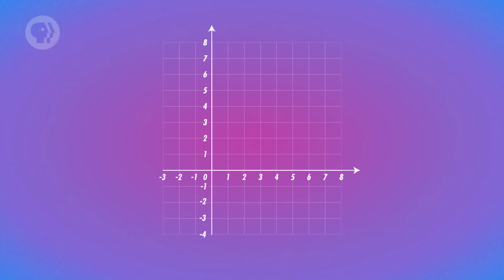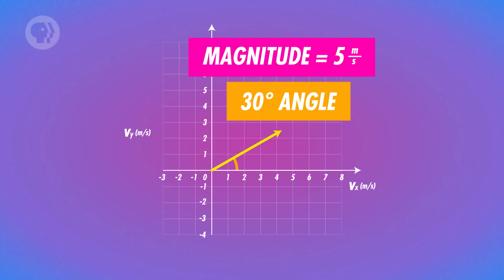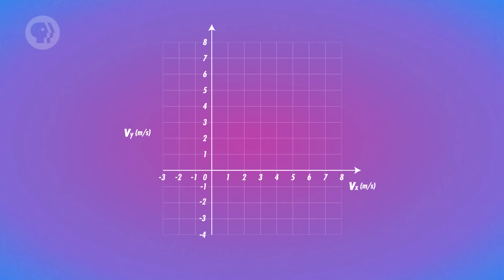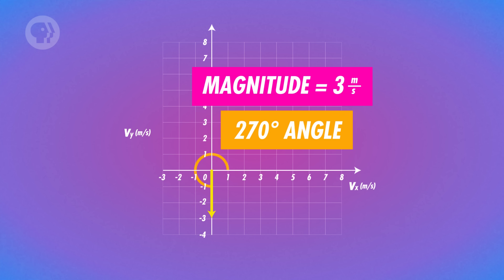Say your pitching machine launches a ball at a 30-degree angle from the horizontal, with a starting velocity of 5 meters per second. We can just draw that as a vector with a magnitude of 5 and a direction of 30 degrees. Let's say your catcher didn't catch the ball properly and dropped it. Then, just before it hits the ground, its velocity might have had a magnitude of 3 meters a second and a direction of 270 degrees, which we can draw like this.